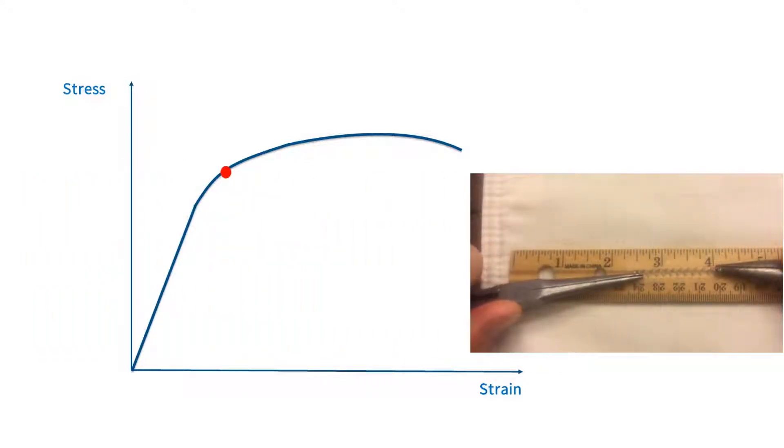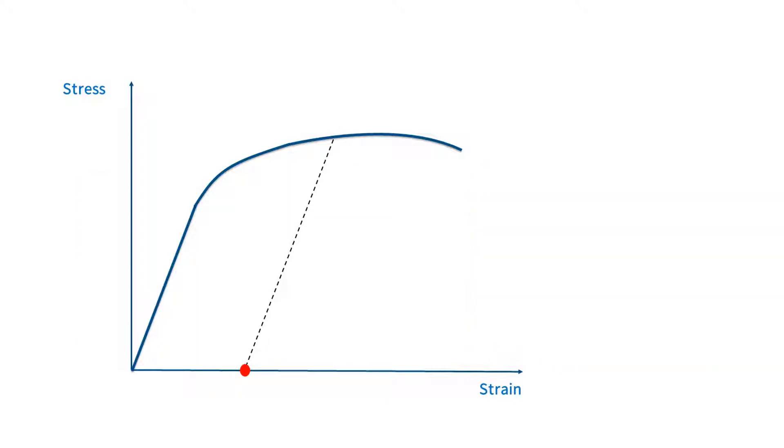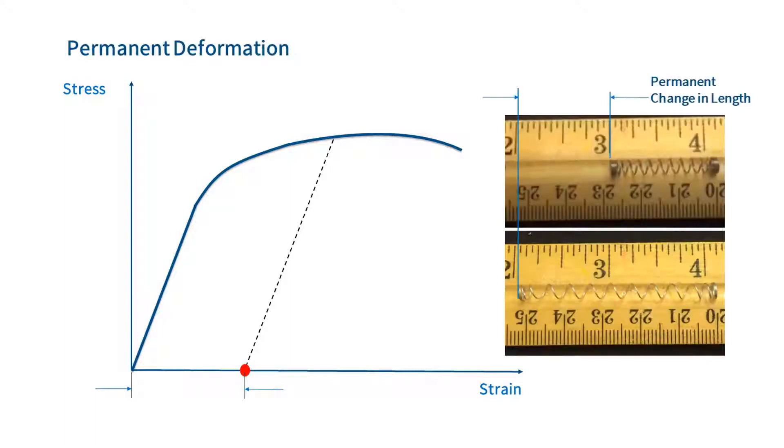For the spring, we continue to load it well beyond the yield point. When we release the load, we follow a new path. Once we remove all of the load, the stress returns to zero, but the strain does not. Physically, we see this as the permanent change in the length of the spring. We call this a permanent deformation.